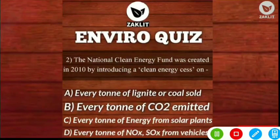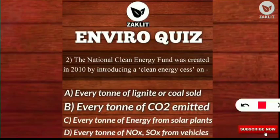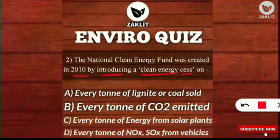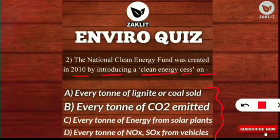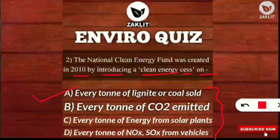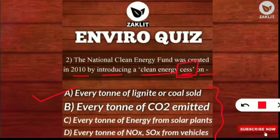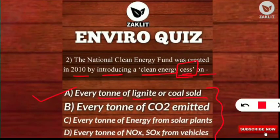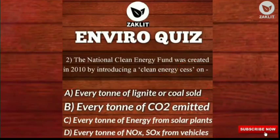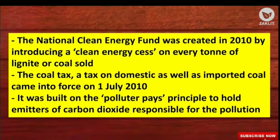The second question: the National Clean Energy Fund was created in 2010 by introducing a clean energy cess on which of the following? The correct option is A. The clean energy cess — cess means tax — was imposed for every ton of lignite or coal sold. Let's note down more about this National Clean Energy Fund.